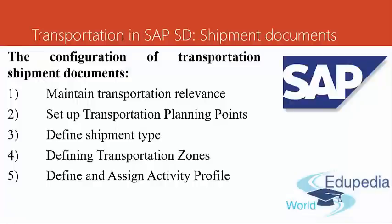Now we will talk about configuration of transportation shipment documents. The main steps in configuration of shipment documents are: Maintain Transportation Relevance, Setting Up Transportation Planning Points, Defining Shipment Types, Defining Transportation Zones, and Defining and Assigning Activity Profile.